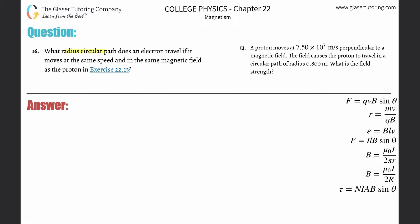Number 16: What radius circular path does an electron travel if it moves at the same speed in the same magnetic field as a proton in example number 13? So first check out number 13 as I discussed how to approach it.